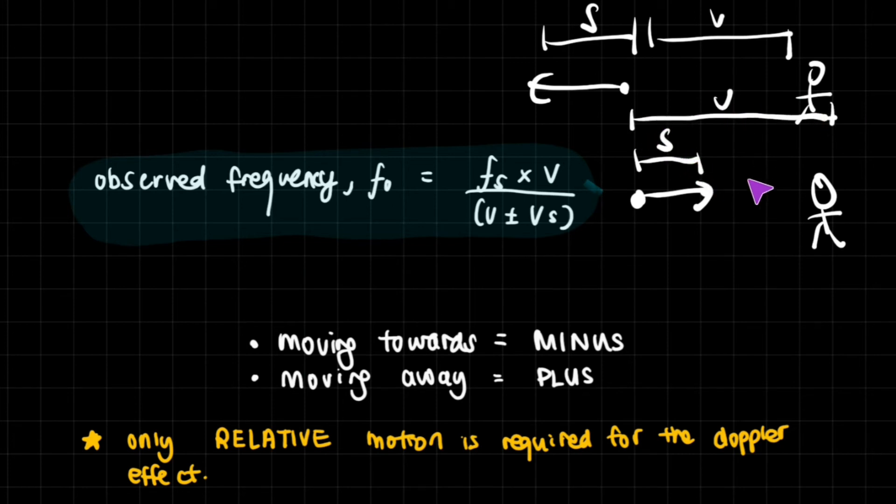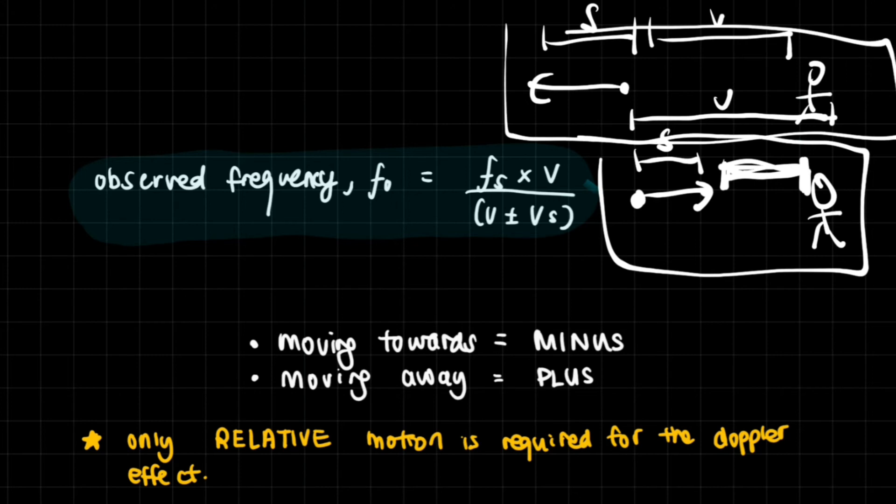And then you either plus or minus. Why do we plus or minus? Well, this is because, as the drawing just shows, if the source moves away from the observer, then you have to add this extra distance to the initial distance, right?